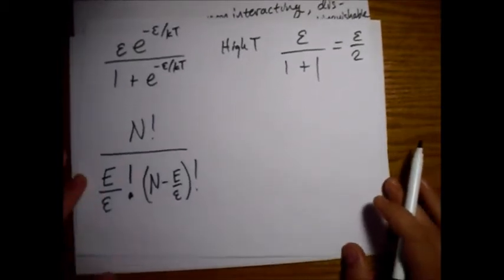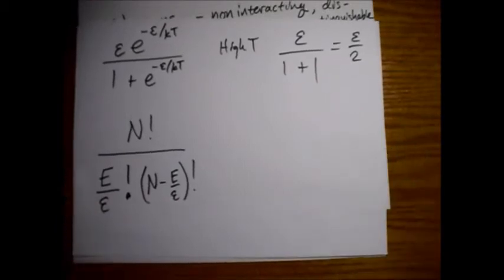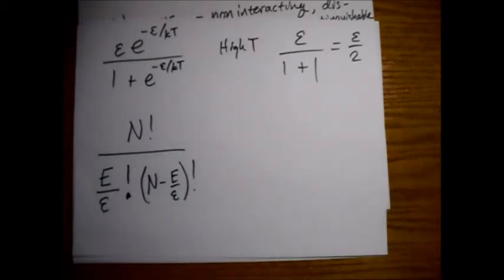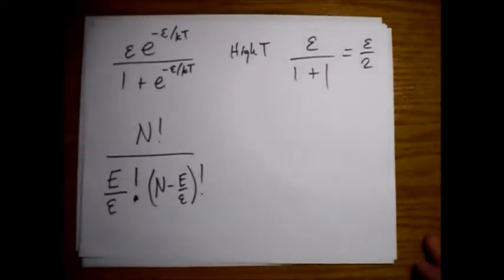For example, in a laser, you're able to pump more atoms up to a higher state, and you get an inversion. So basically you're able to give it more energy, and actually, by actively interfering, you're able to raise more atoms to a higher state, and actually decrease the entropy.